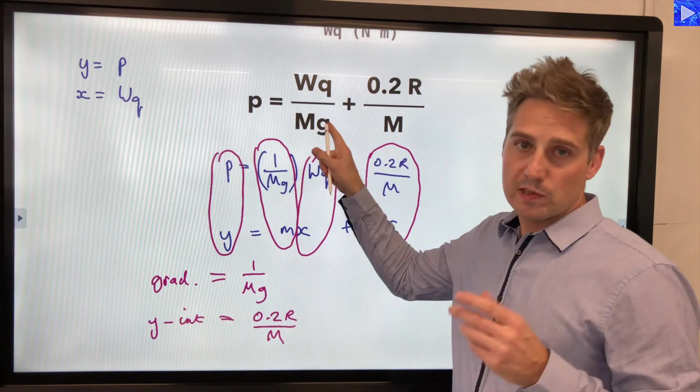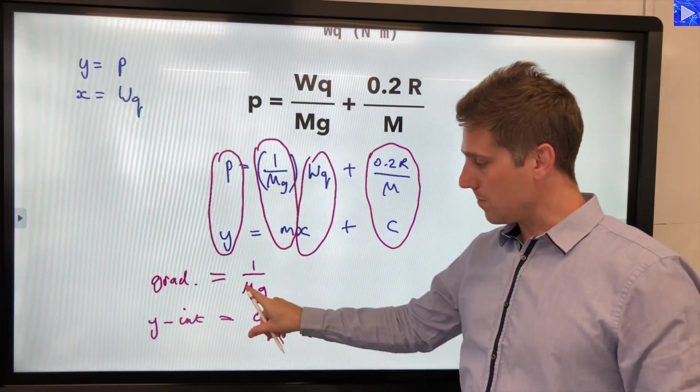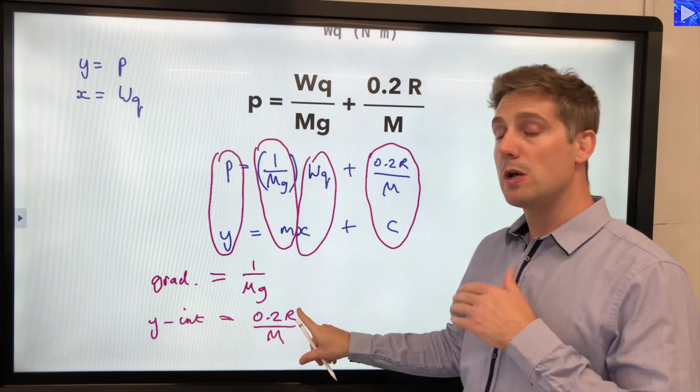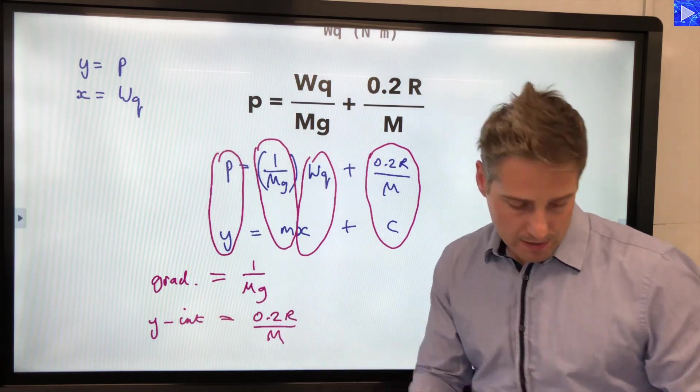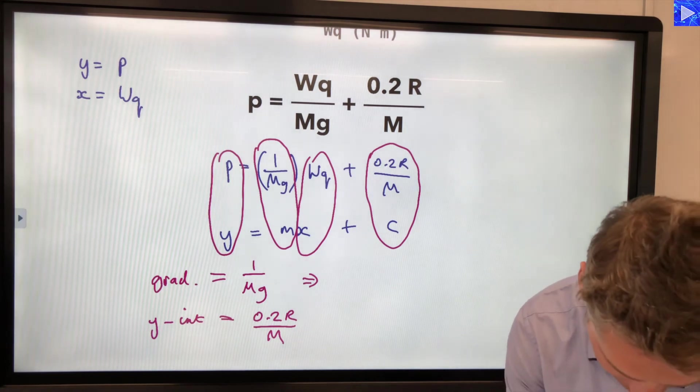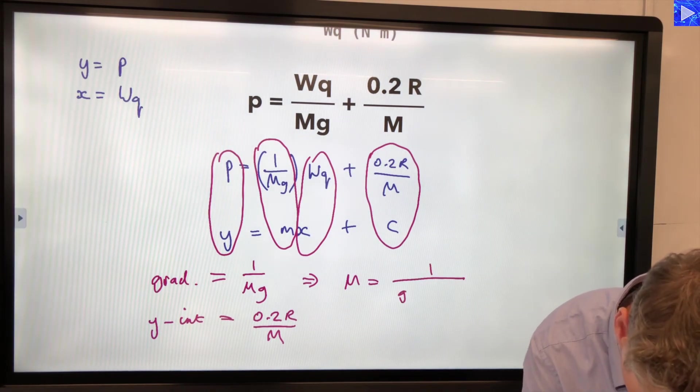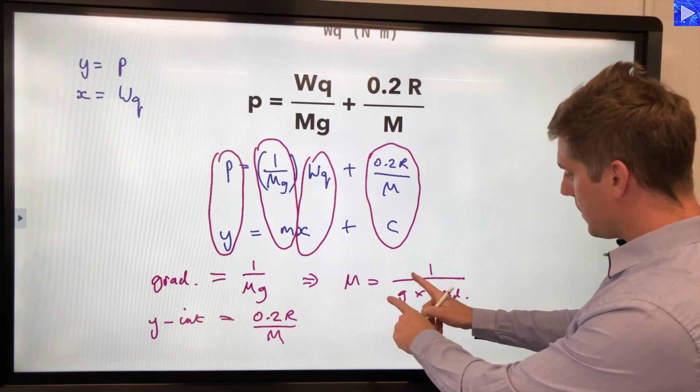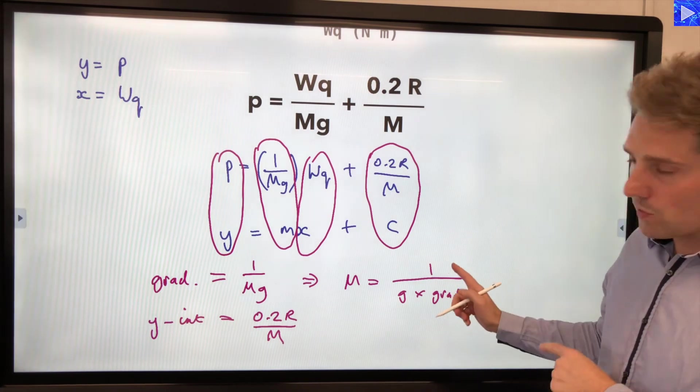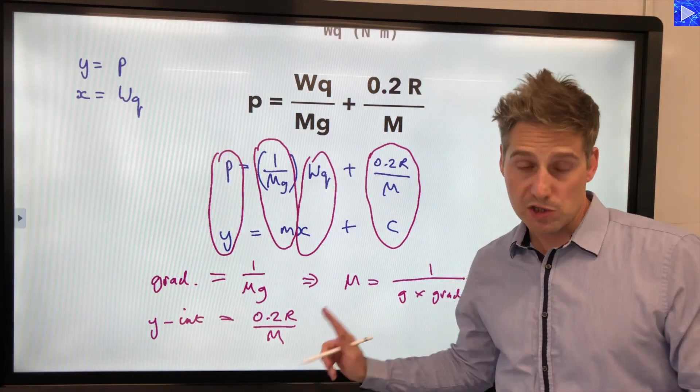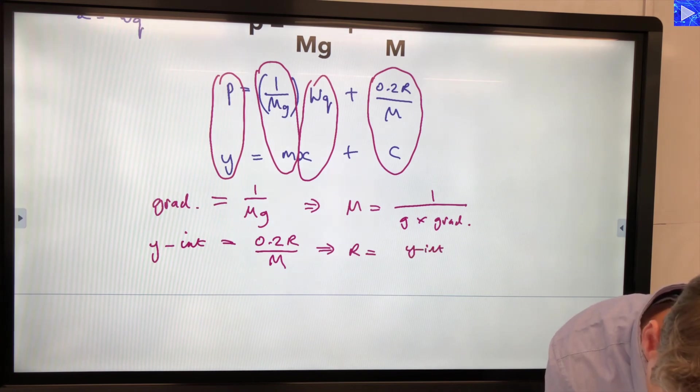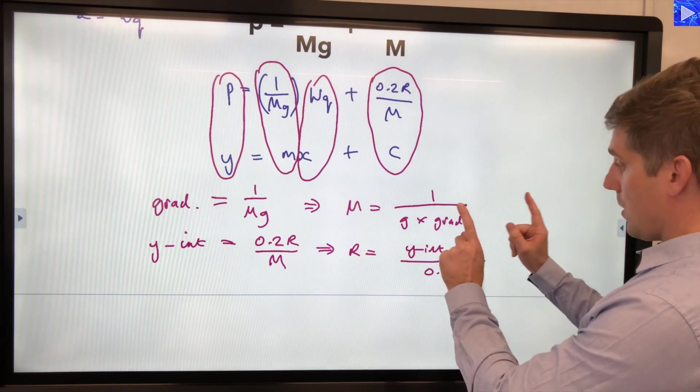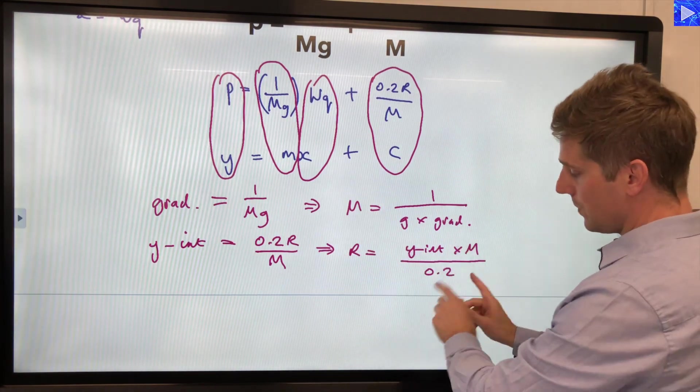Okay so like I said we want to determine the value for m. We need to use the gradient first. You see m occurs in both of these. But since r is an unknown as well we couldn't use this equation first. So work out your gradient and then substitute it in here. Rearrange for m. So that equation would look like this. So m equals 1 over g times the gradient. And then once you've got that value of m you can use it over here. And therefore we rearrange this equation for r. Let's put that up a bit. Okay so r would be equal to the y intercept multiplied by m divided by 0.2.